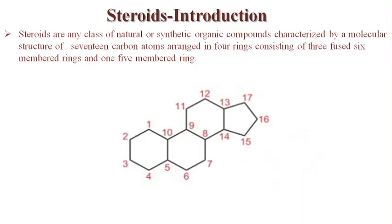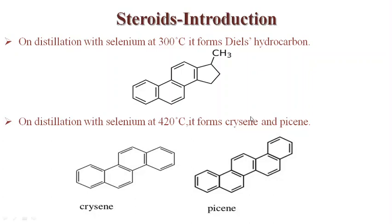Another definition: steroids are any class of natural or synthetic organic compounds characterized by a molecular structure of seventeen carbon atoms arranged in four rings — consisting of three fused six-membered rings and one five-membered ring. The numbering follows the order we discussed earlier.